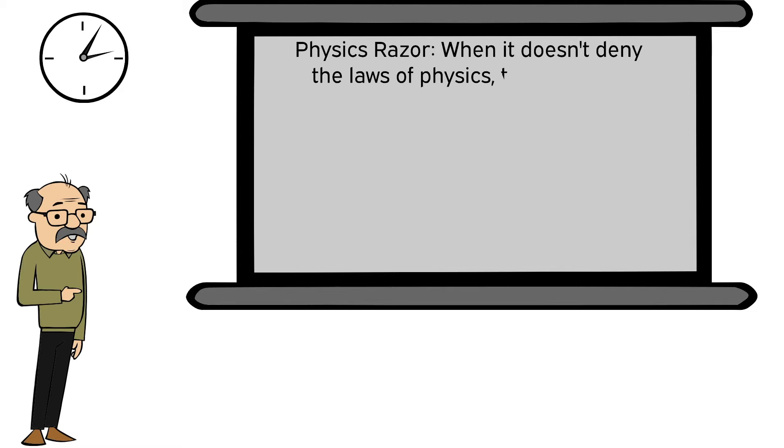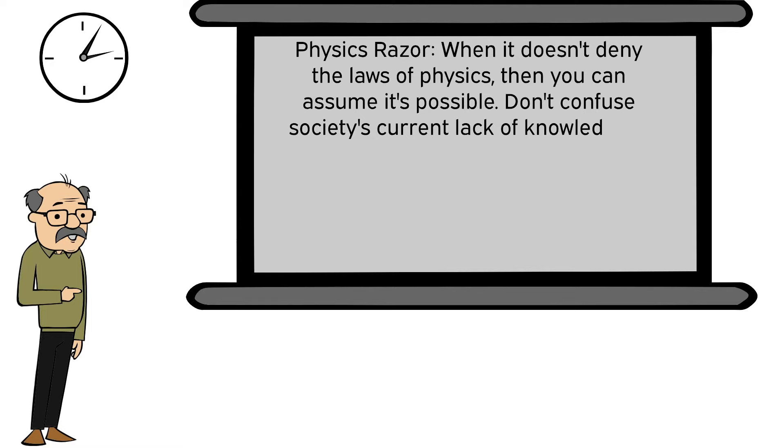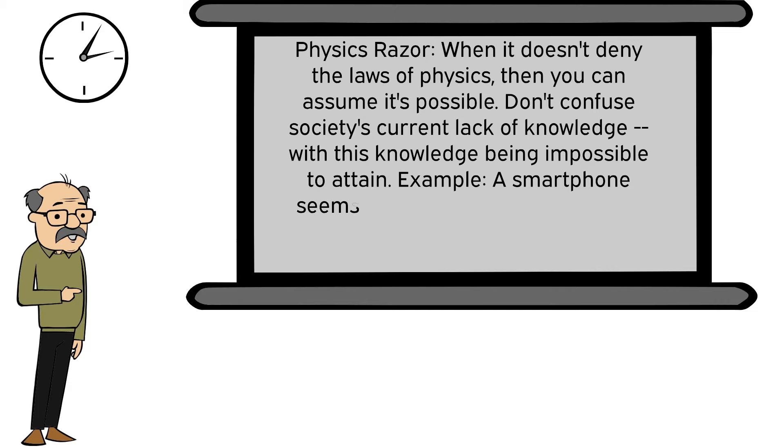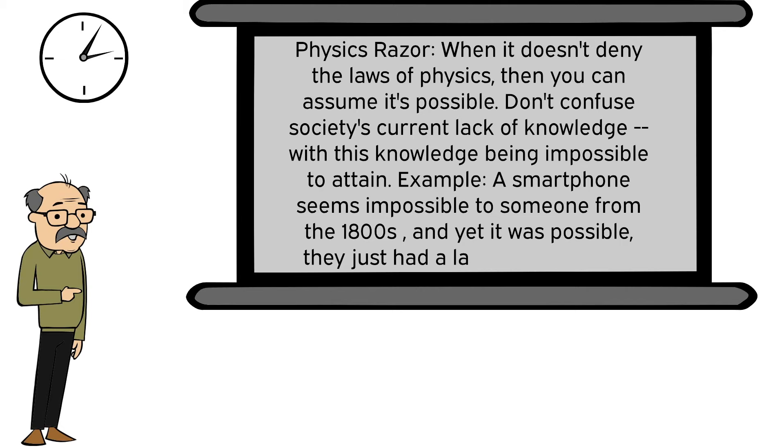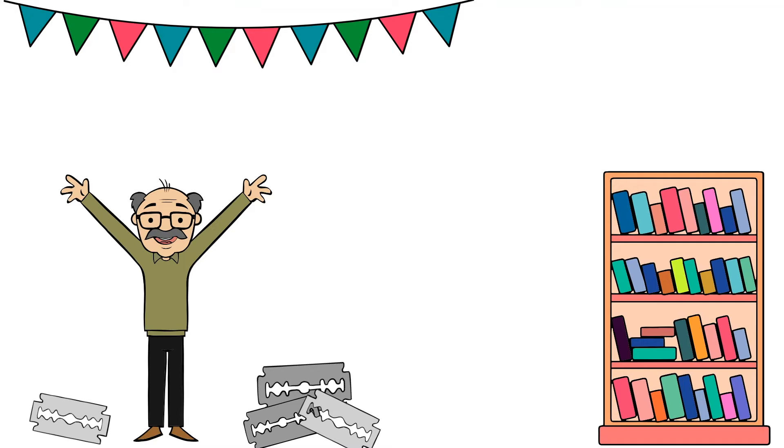Physics razor: when it doesn't deny the laws of physics, then you can assume it's possible. Don't confuse society's current lack of knowledge with this knowledge being impossible to attain. Example: a smartphone seems impossible to someone from the 1800s, and yet it was possible. They just had a lack of knowledge.